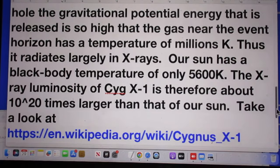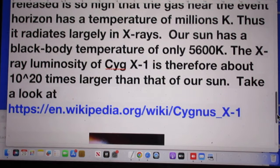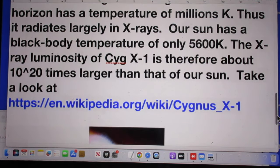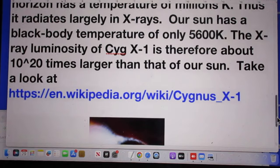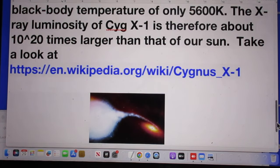Thus, it radiates largely in X-rays. Our sun has a black body temperature of only 5,600 degrees Kelvin, which is much lower. The X-ray luminosity of Cygnus X-1 is therefore about 10 to the 20 times larger than that of our sun.